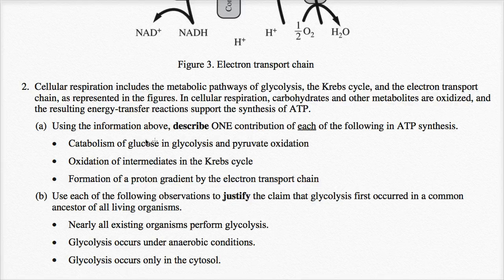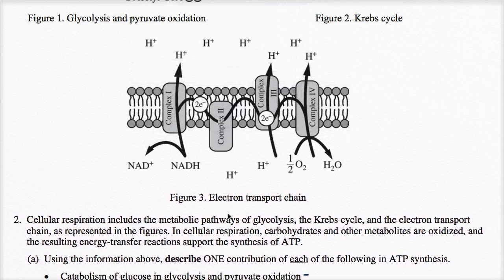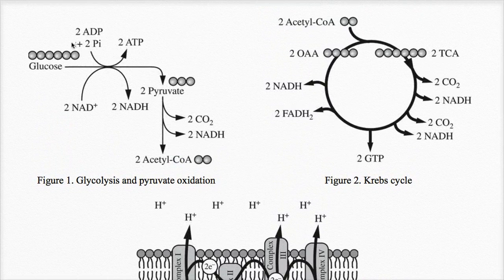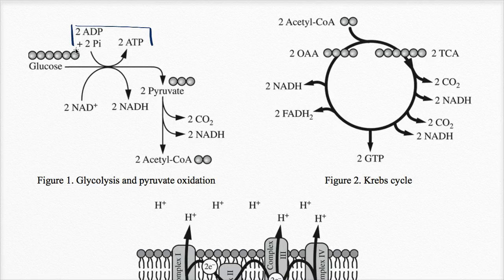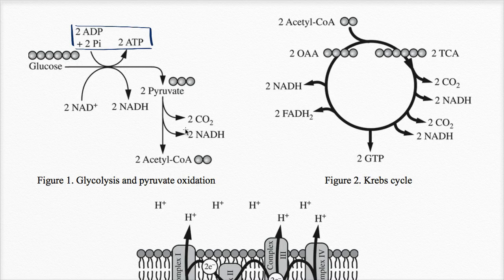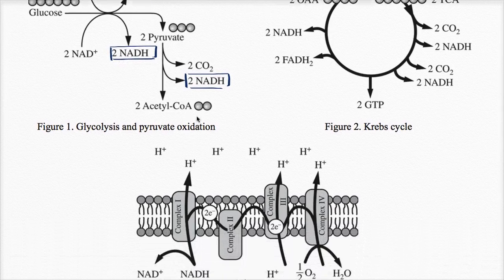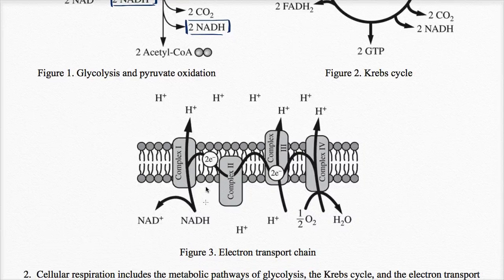So let's just answer it. We have to describe one contribution of each. So let's first focus on glycolysis. So if we look here, there's more than one contribution. You see that it can phosphorylate these two ADPs to two ATPs, so that's one of the contributions we could list. We could say that it's producing these NADHs, which can provide both the hydrogen proton and more importantly, the high energy electrons for the electron transport chain later on.